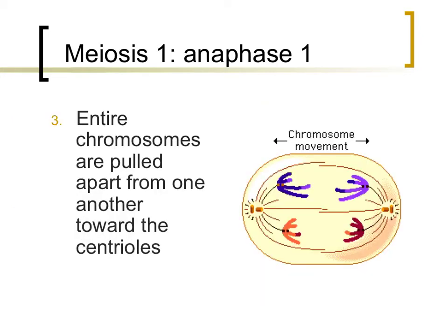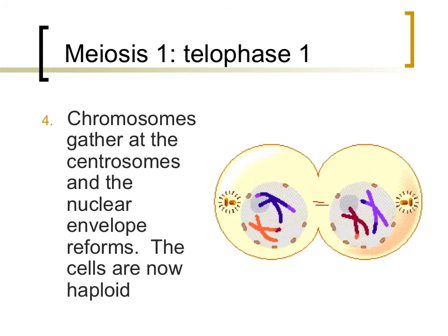During anaphase I of meiosis, entire chromosomes are pulled away from one another towards centrioles. This differs from anaphase of mitosis, where chromatids are pulled apart from one another. Finally, the chromosomes gather along the centrosomes and the nuclear envelope is reformed. Since each chromosome, containing different information, is pulled towards different cells, half of the genetic information is lost from each cell during telophase I of meiosis. At this point of meiosis, cells are referred to as haploid.